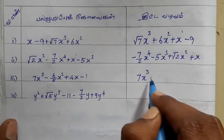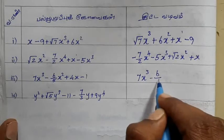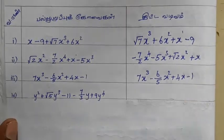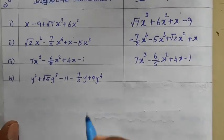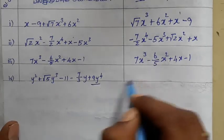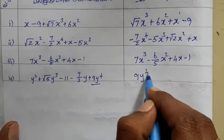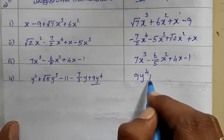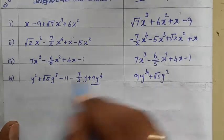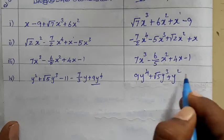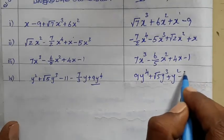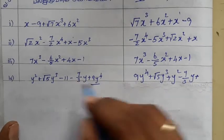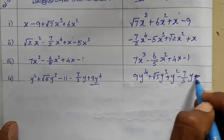Next example: y power 4, then y squared, x power 3, x power 2, with terms like y squared minus 7 by 3 y, using plus and minus signs.